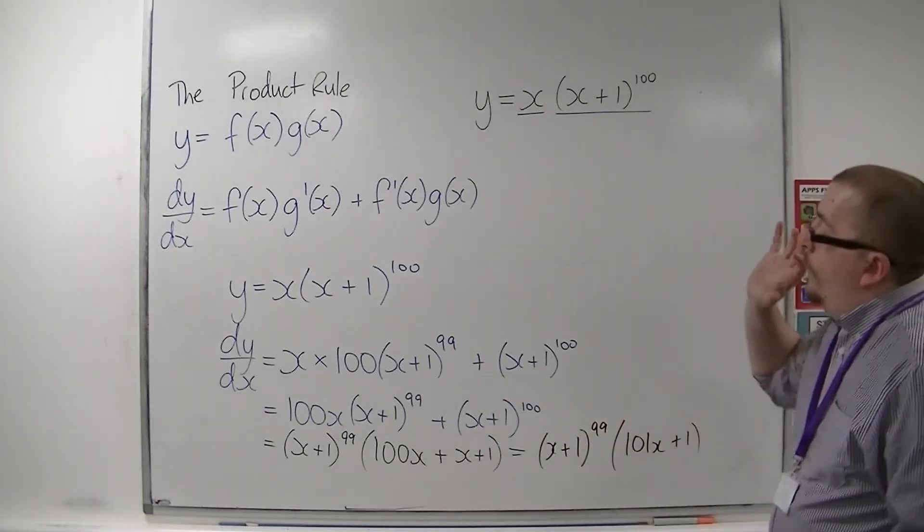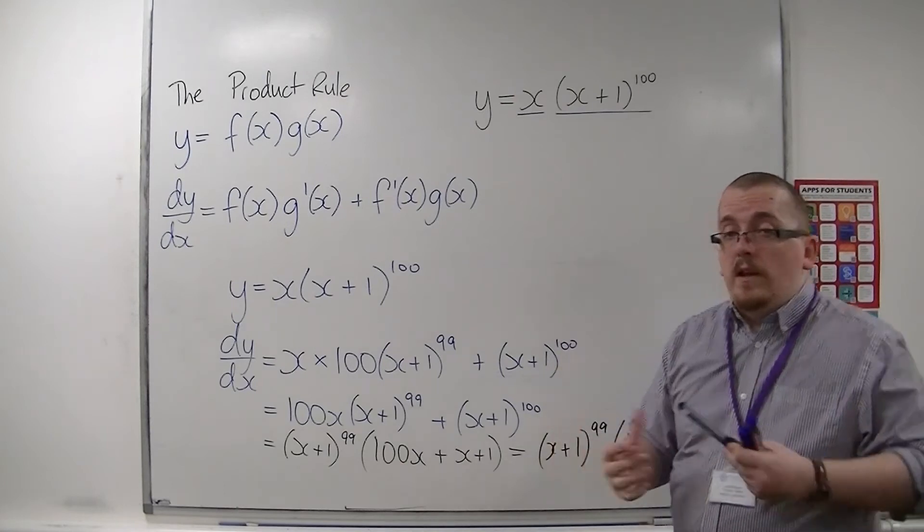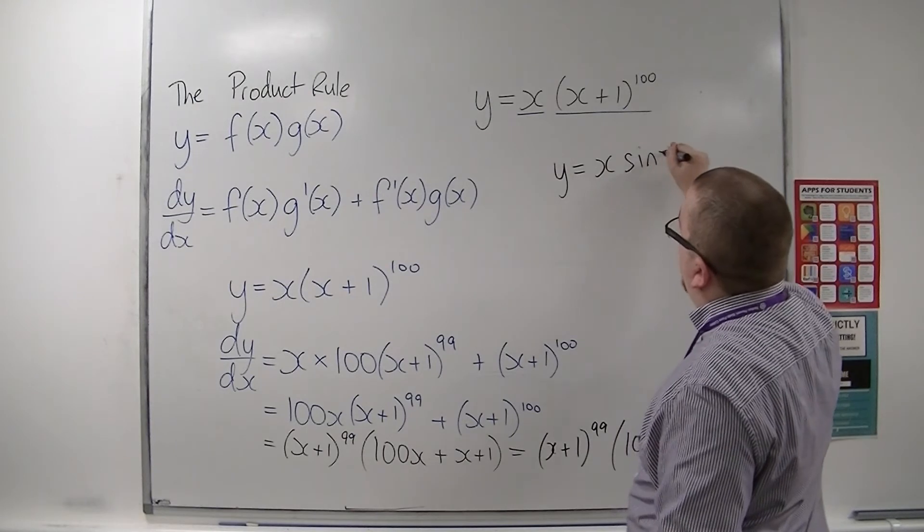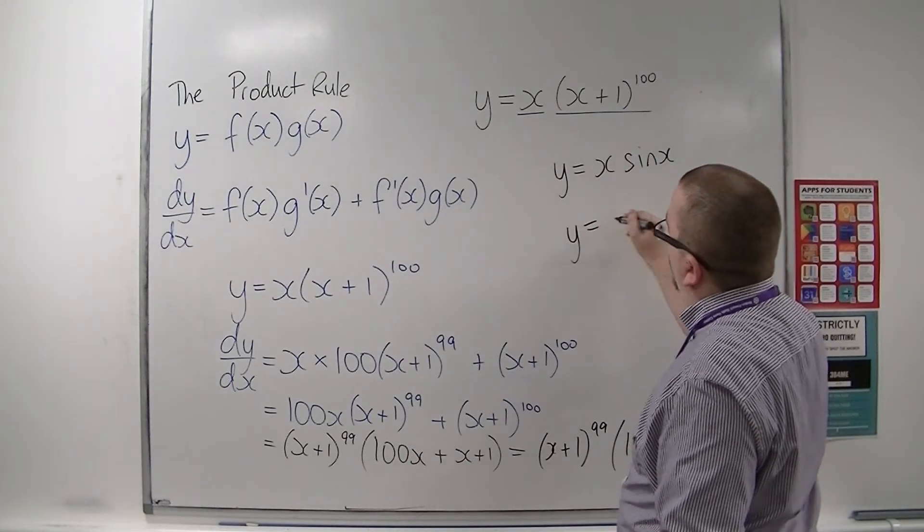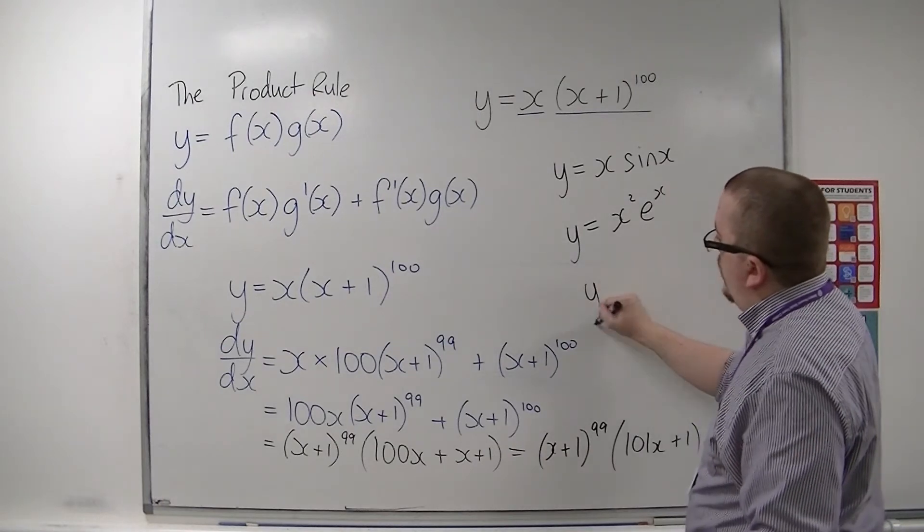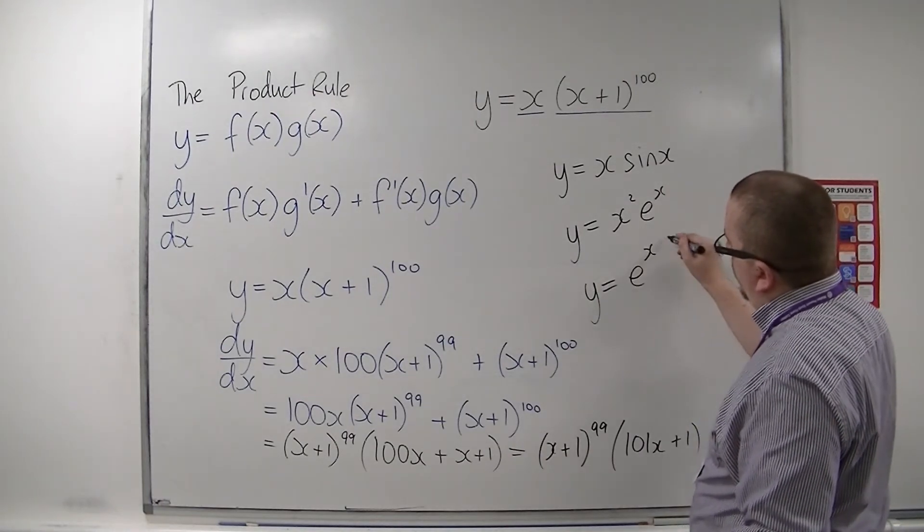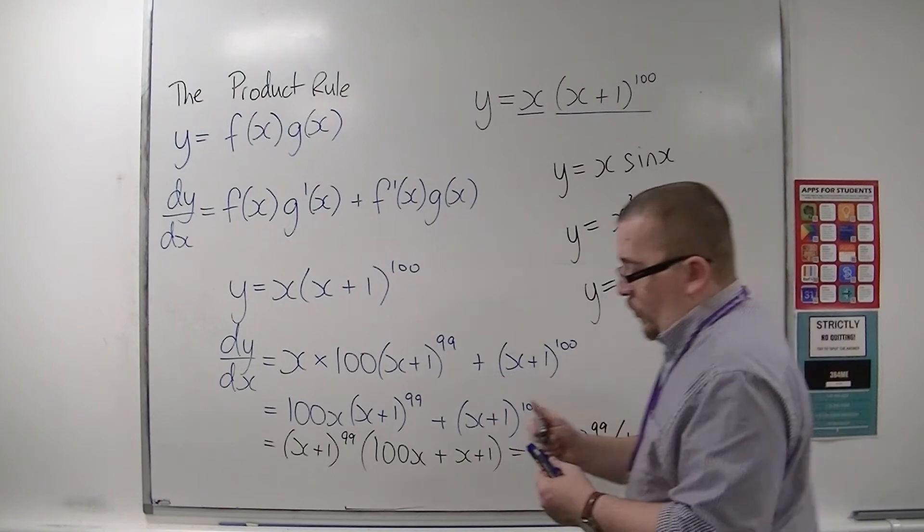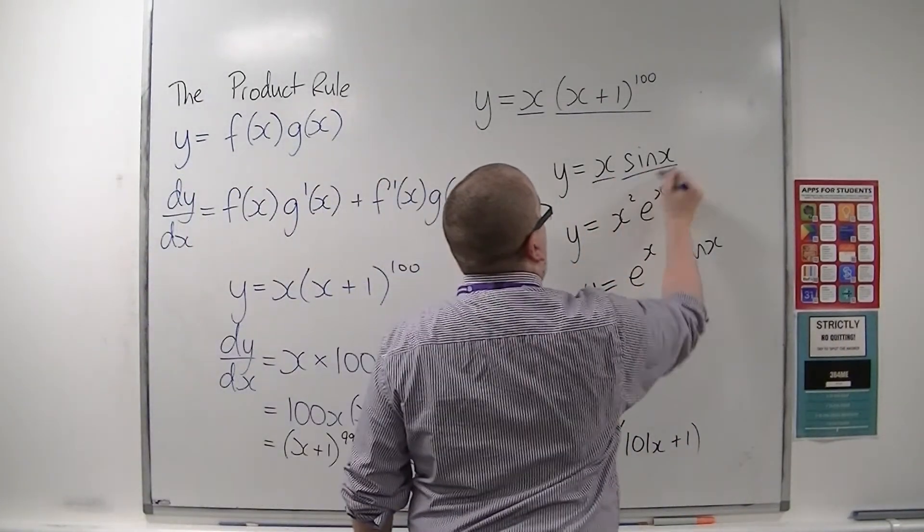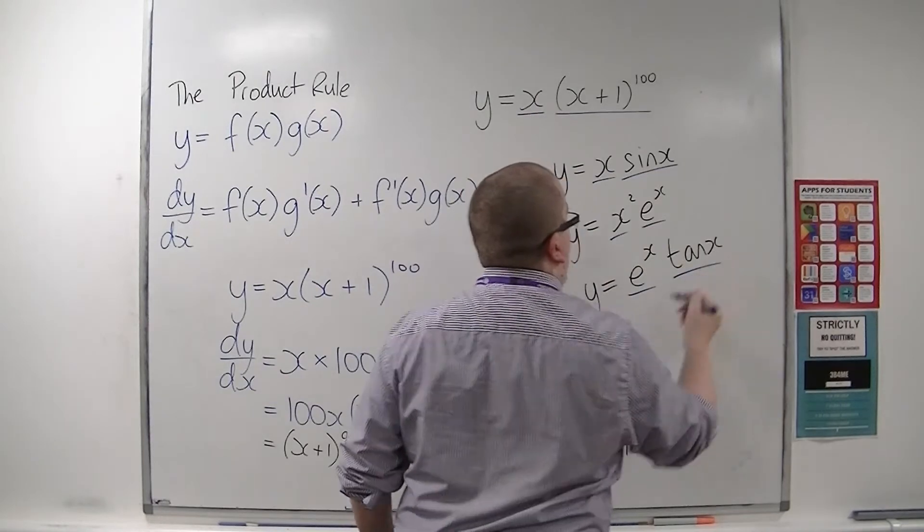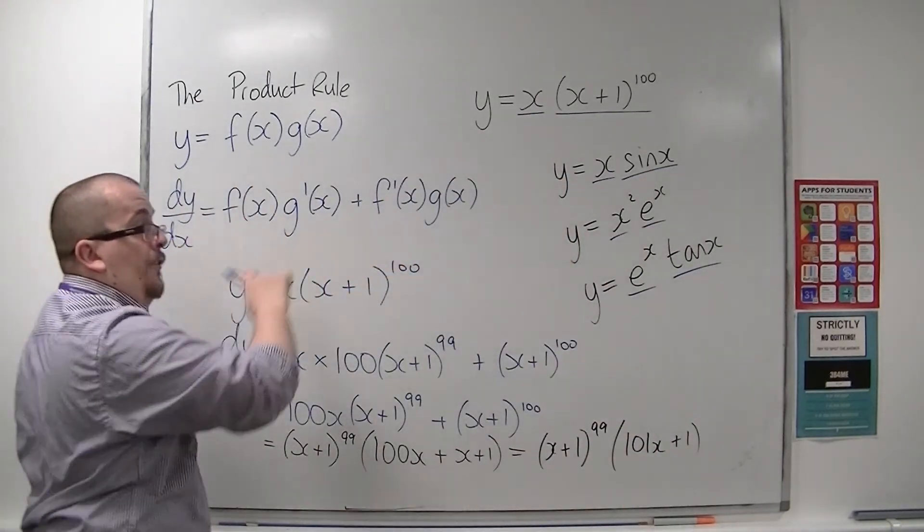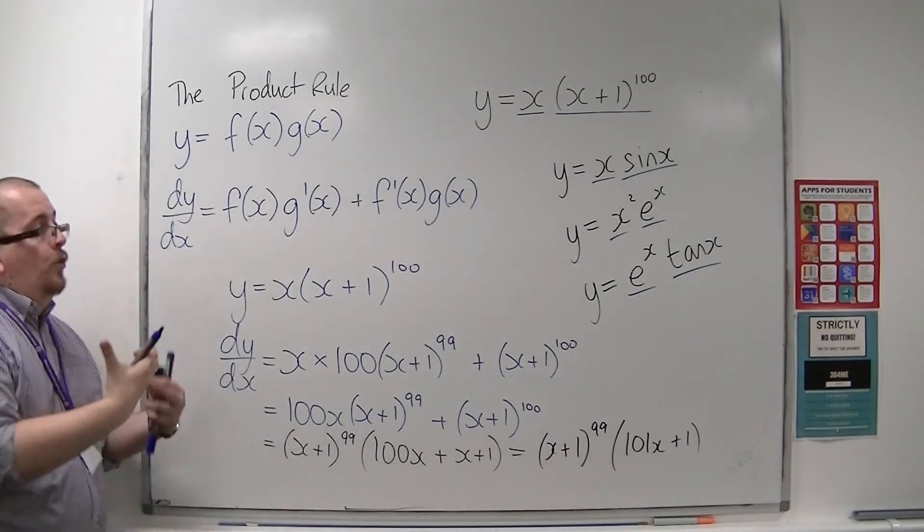So the product rule will enable us to differentiate things like y is equal to x sin x, or y is equal to x squared e to the x, or y is equal to e to the x tan x. All of these are a product of two separate functions. And therefore, we can use this formula in order to differentiate.